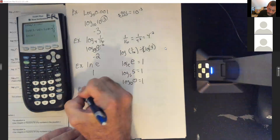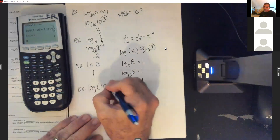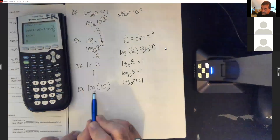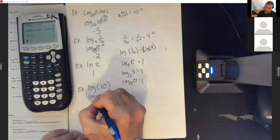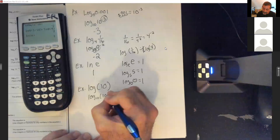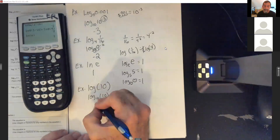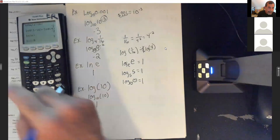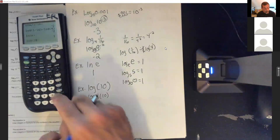What about log(10)? Since there's no base shown, it's automatically base 10. So this is really log base 10 of 10 — the base matches the result, so the answer is 1. You can just punch log(10) and hit enter to get 1.